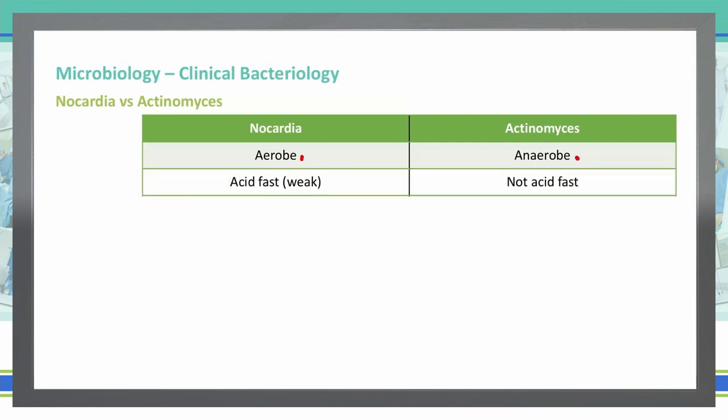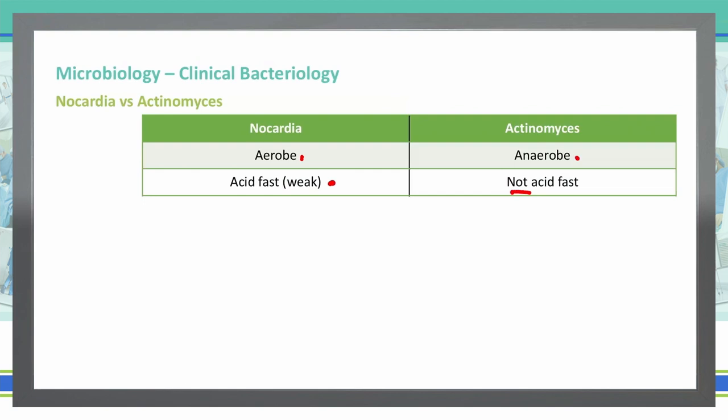The best way to determine which one you're looking for is to do an acid-fast stain. With Nocardia, you will see that it is weakly acid-fast, meaning that we will see some red color come out of the bacteria when we stain it with an acid-fast stain, whereas Actinomyces is not acid-fast and will only remain blue under the microscope.